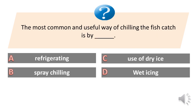The most common and useful way of chilling the fish catch is by: A. Refrigerating. B. Spray chilling. C. Use of dry ice. D. Wet icing. Answer is D. Wet icing.